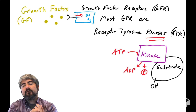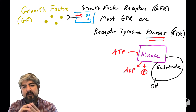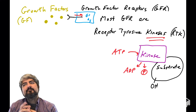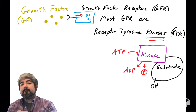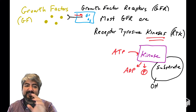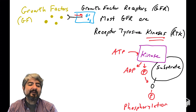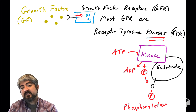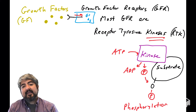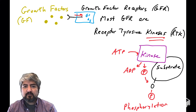The kinase doesn't put the phosphate just anywhere on the substrate — it transfers it to specific hydroxyls within the substrate. There are three amino acids that have hydroxyl groups; you should try to recall and draw those. In general, the kinase transfers a phosphate group from ATP onto a hydroxyl, attaching it covalently to that oxygen atom, and the protein becomes phosphorylated.